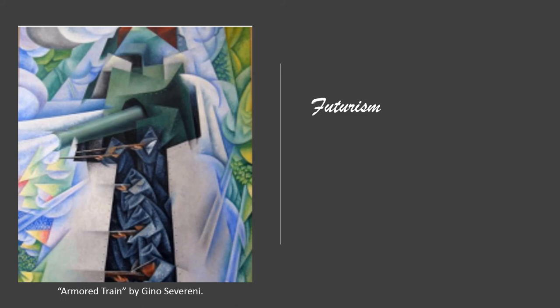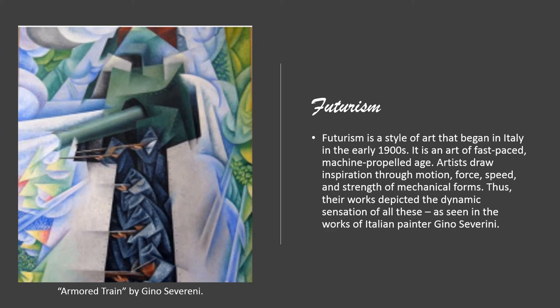Futurism is an art style that began in Italy in the early 1900s — an art of the fast-paced, machine-propelled age. Artists drew inspiration from motion, force, speed, and the strength of mechanical forms, depicting the dynamic sensation of movement. An example is The Armored Train by Gino Severini. Paintings under Futurism reflect what the artist envisions in the future.